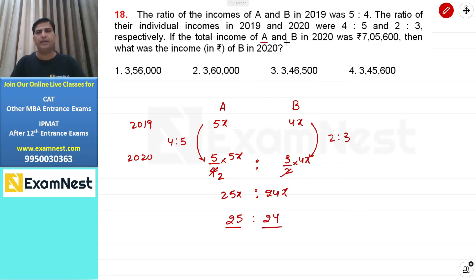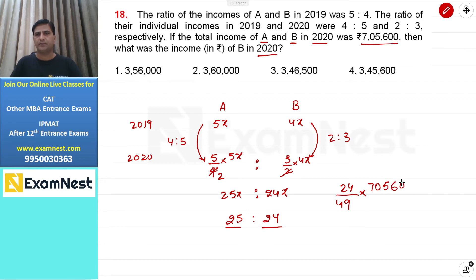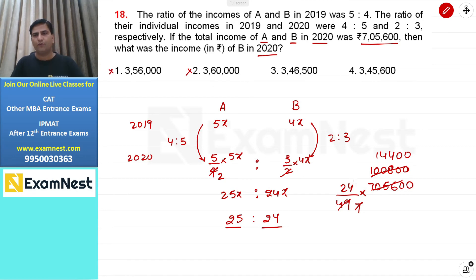If the total income of A and B in 2020 was Rs. 705600, then what was the income of B in 2020? B की income = 24/49 multiplied by 705600। Calculation shortcut: last में 2 zeros आएंगे; 4 into 4 = 16, hundreds digit = 6। सिर्फ 4th option की hundreds digit 6 है, तो 4th option answer है।